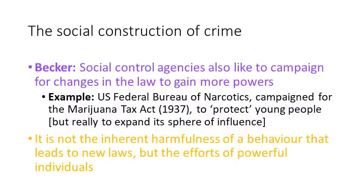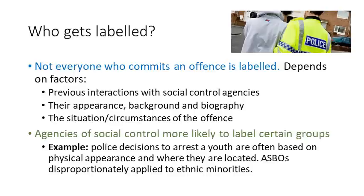There was lots of concern, in particular amongst white middle-class America, that young people were experimenting with marijuana, causing them to break the law and engage in promiscuity. In reality, the Federal Bureau of Narcotics engaged in this campaign to expand its sphere of influence and gain more powers. What Becker is showing us here is that it's not the inherent harmfulness of a behaviour that leads to new laws — there were no recorded cases of an individual dying from a marijuana overdose — but rather the efforts of powerful individuals. Comparing this to alcohol, there might be a stronger argument for making that illegal rather than marijuana.